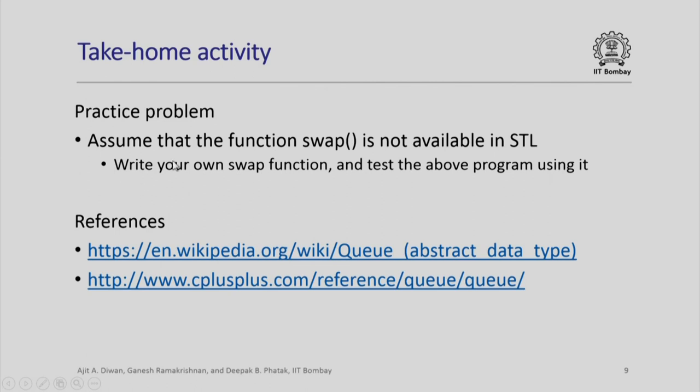As a practice problem, just like I requested you to try it out for stacks, assume that the function swap is not available in STL. Can you write your own swap function to provide the same process of swapping two queues? Test the above program using that function. Use your own swap function and test this program.